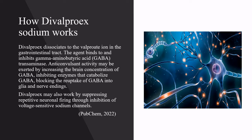Divalproex dissociates to the valproate ion in the gastrointestinal tract. The agent binds to and inhibits gamma-aminobutyric acid transaminase. Anticonvulsant activity may be exerted by increasing the brain concentration of GABA, inhibiting enzymes that catabolize GABA, and blocking the reuptake of GABA into nerve endings.